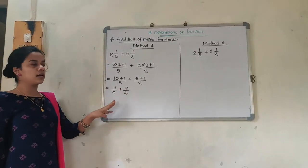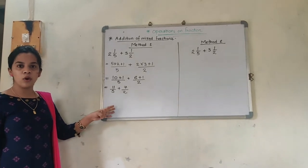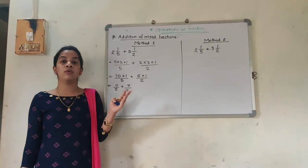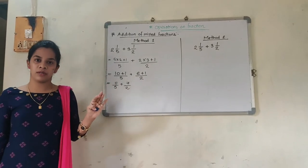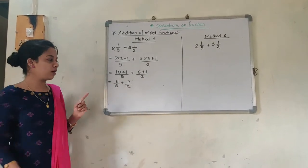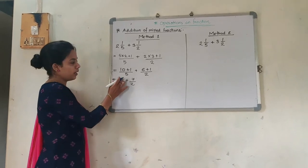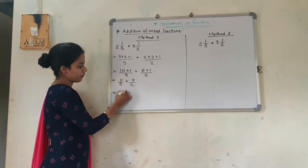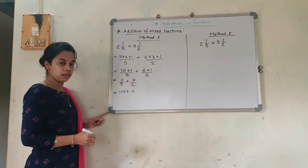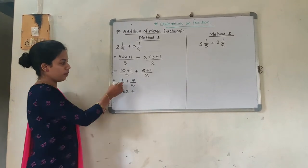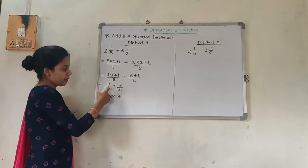Now tell me: are the denominators the same? They are not the same, they are not common. So what are we supposed to do? We are going to do cross multiplication — I hope you remember cross multiplication from 5th standard. Cross multiplication: 11 into 2 plus 5 into 7, with denominators 5 into 2 on both sides.